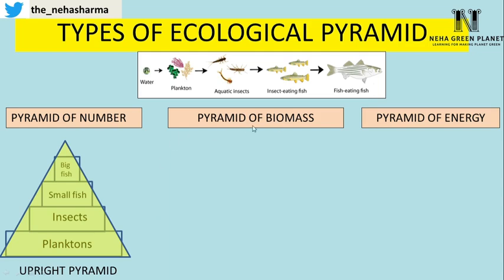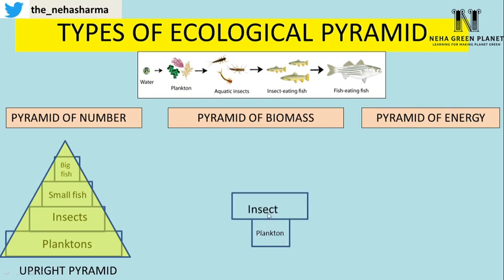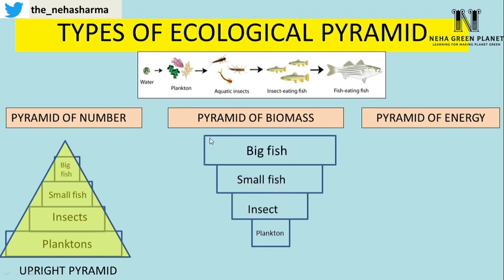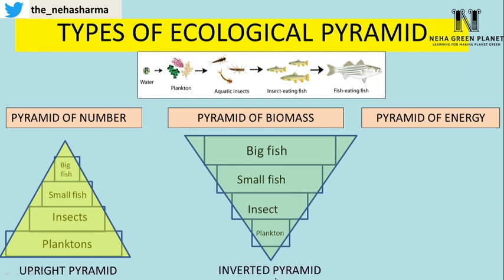For the pyramid of biomass in the aquatic food chain, the dry weight of planktons is actually minimum even if they are in billions — their individual weight is very small. Since producers are always at the base, planktons are at the base but with a small box area. Insects are the next trophic level with a wider box because their biomass is higher. Then small fish and big fish, with big fish having the maximum box area because their weight is very high. Joining all edges, the pyramid points downward — this is known as an inverted pyramid.